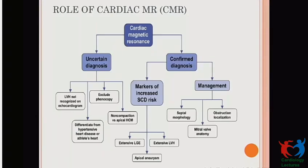ECG and echo are often not enough, and cardiac MR plays a pivotal role in the diagnosis of HCM. Not only for diagnosis, but in confirmed cases it can detect extensive late gadolinium enhancement, apical aneurysm, and extensive LGE. In management, it assists with septal morphology for planning surgery, mitral valve anatomy for intervention decisions, and localizing obstruction. A patient with HCM should have at least one cardiac MR during the evaluation process.